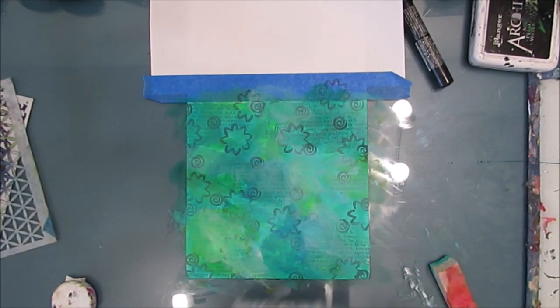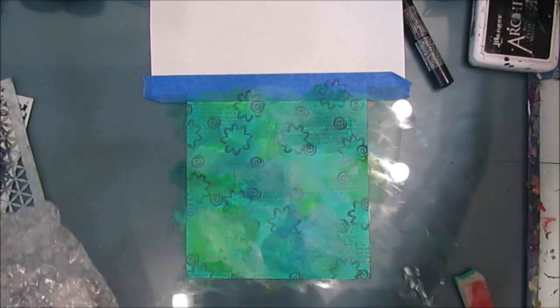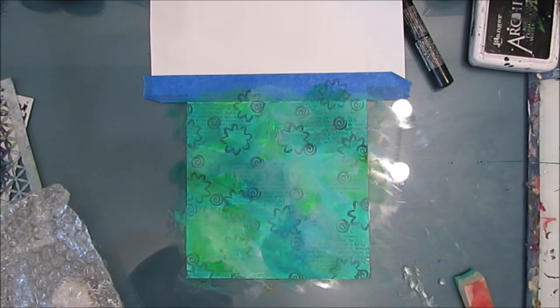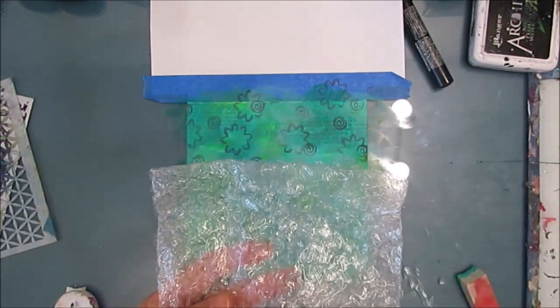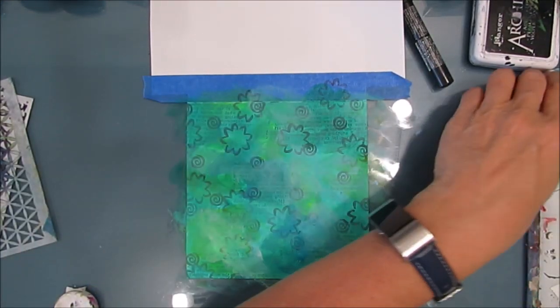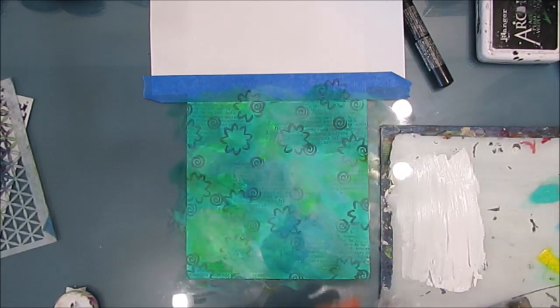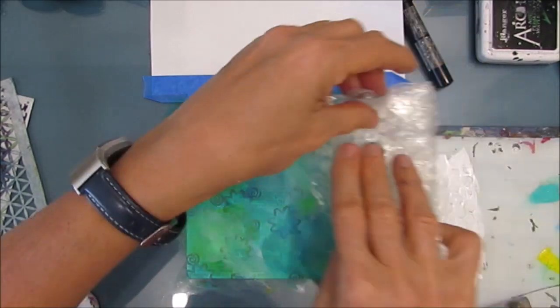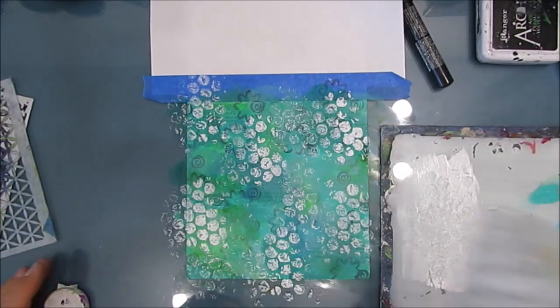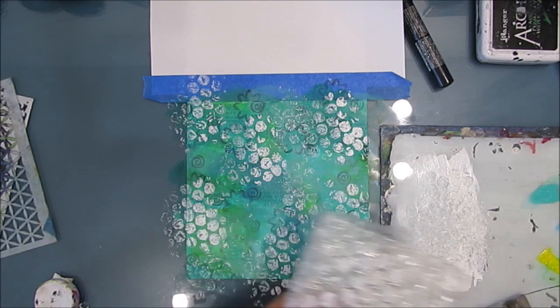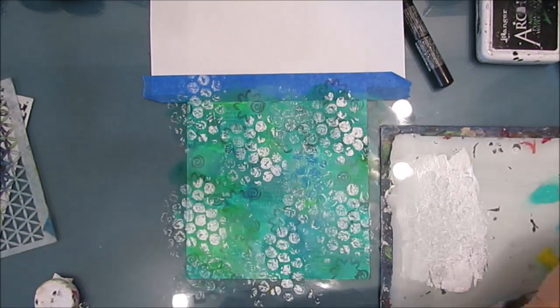Now I'm grabbing some DIY mark makers and good old bubble wrap—what works better for sea bubbles than bubble wrap? I'm taking some white acrylic paint, spreading it on the glass mat, pressing that in and just adding some bubbles with the white.